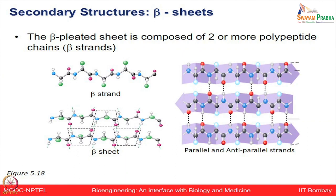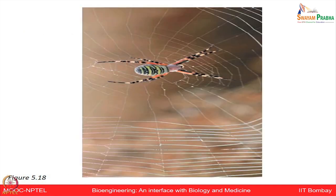Beta sheets are another common periodic structural motif and are fully extended structures. They can be parallel or anti-parallel. The beta-pleated sheet is composed of two or more polypeptide chains. One example shown is spider's silk fiber, which is a structural protein that contains beta-pleated sheets.